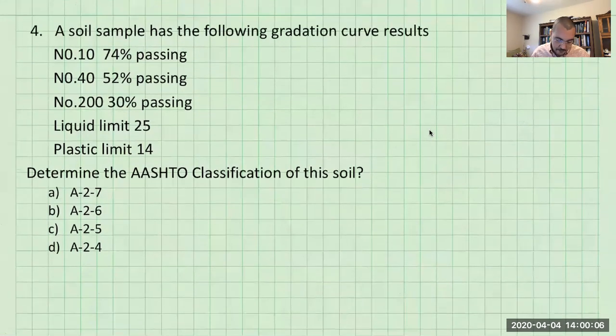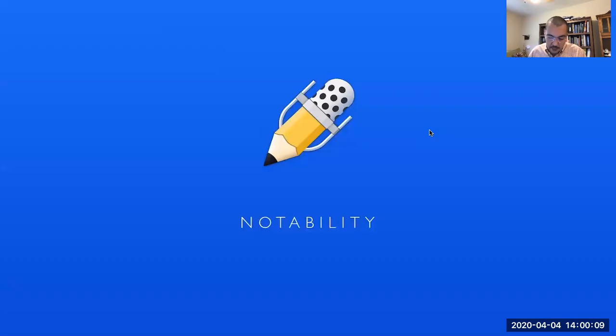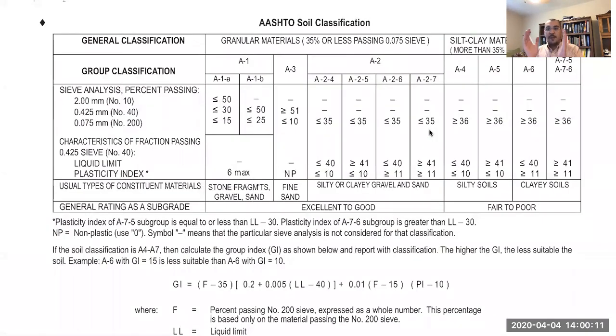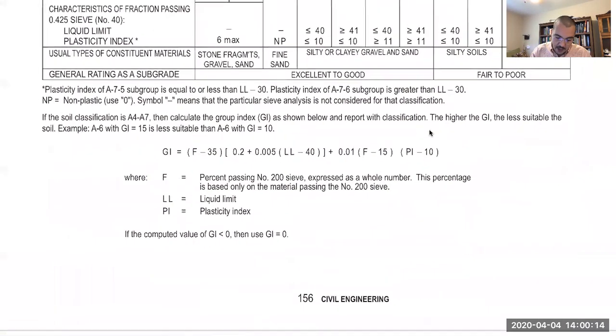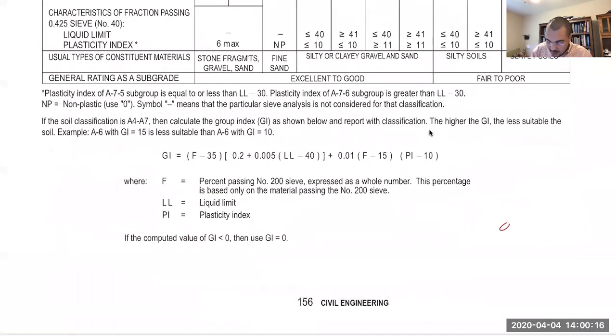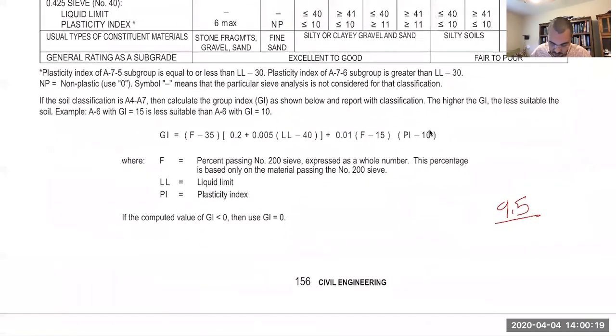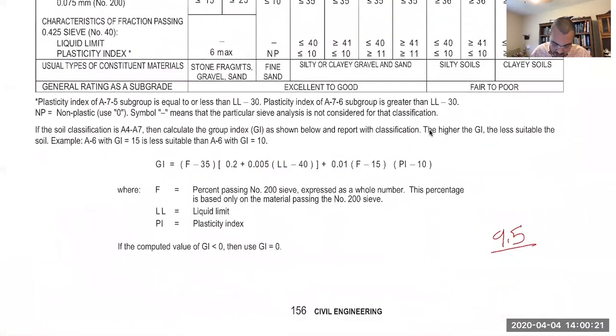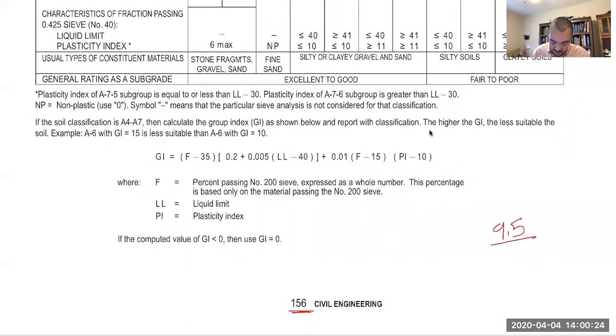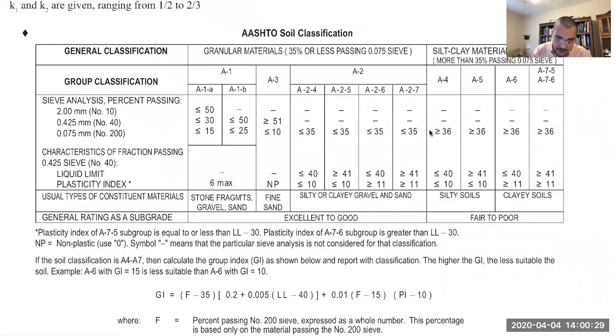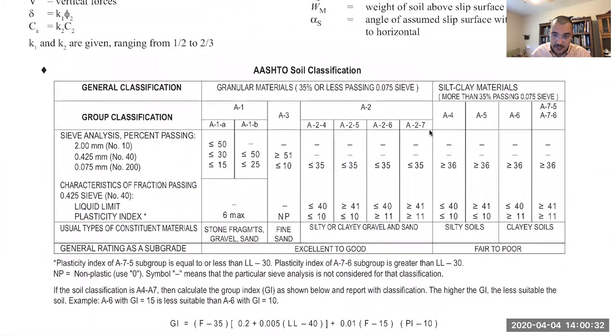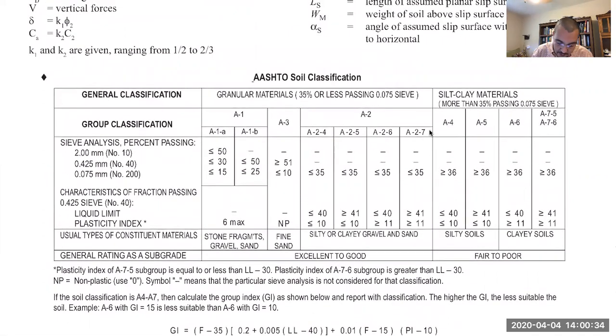So again we're going to the FE manual, this will be on your left hand side of your screen. This is version 9.5 of the FE reference manual and the AASHTO system is on page 156. Now if we take a look at this AASHTO classification system, the way you use this is you start with the left hand side. So you start here.